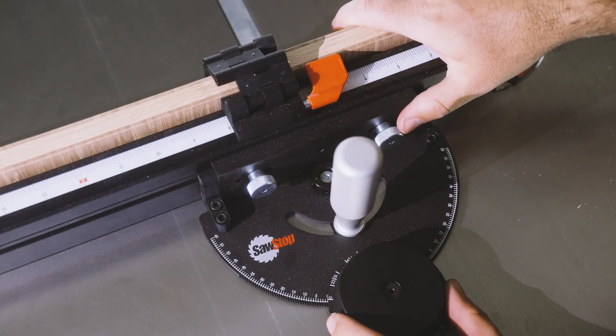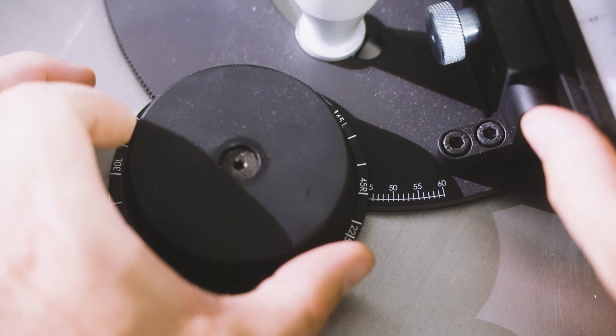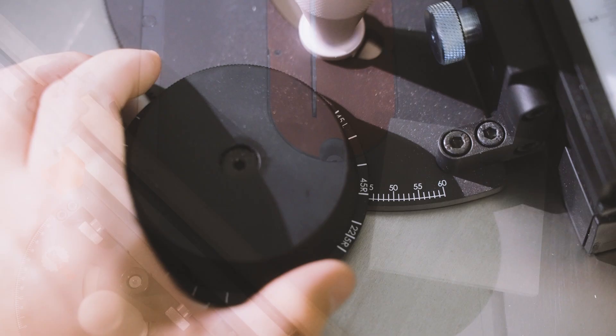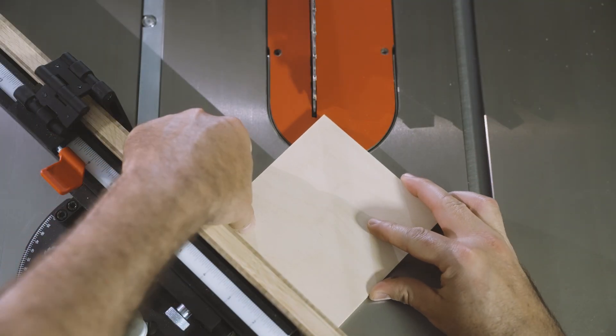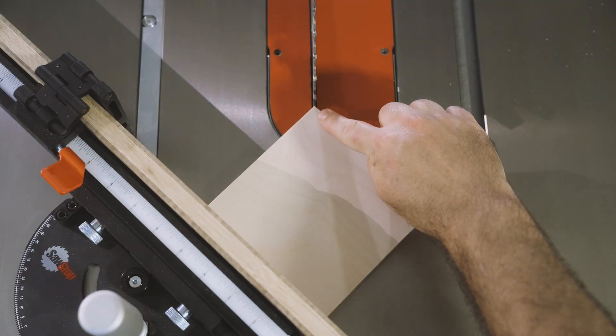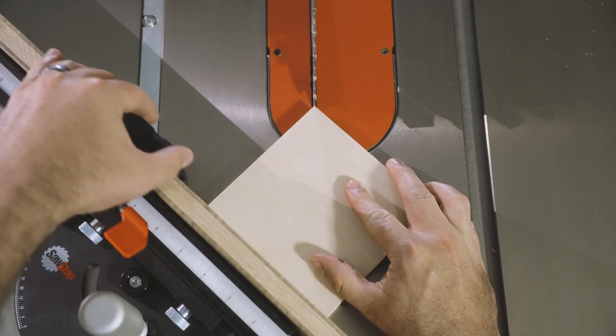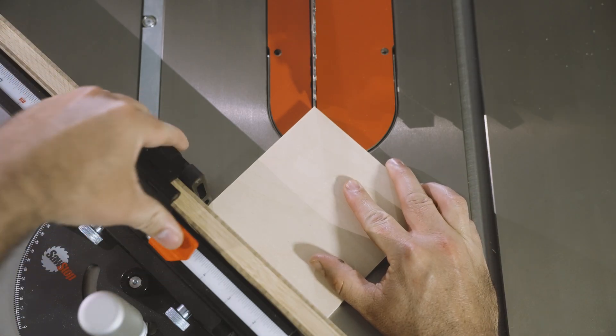Next we'll set up our miter gauge to a 45 degree angle. We want to set up our squares so the blade will cut diagonally right down the center, and then we'll set our stop to accurately repeat the cut 4 times.